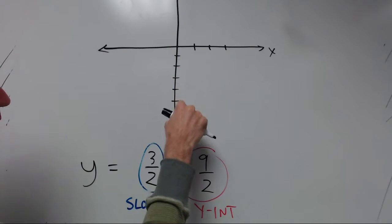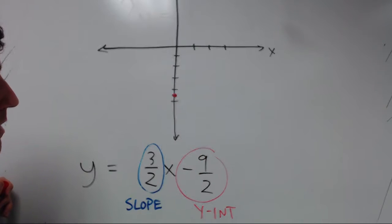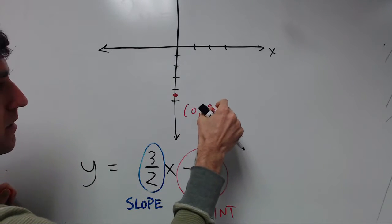So 1, 2, 3, 4, so halfway between there. And that will be our point. And that's the point 0, negative 9 halves.